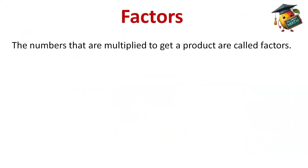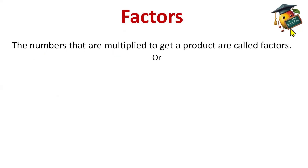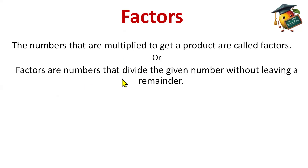Now, factors. What are factors? The numbers that are multiplied to get a product are called factors. So when we multiply two numbers, the numbers we multiply are the factors — we get the product, but the product is not the factor. The numbers we are multiplying together, those numbers are the factors. Or we can say factors are the numbers that divide the given number without leaving a remainder — when we divide two numbers and we have remainder 0, then we call them factors.